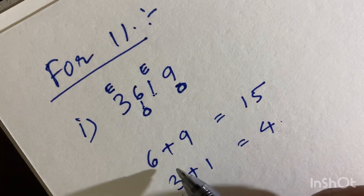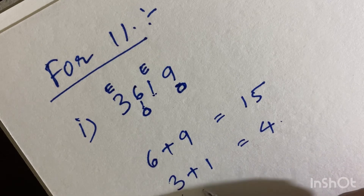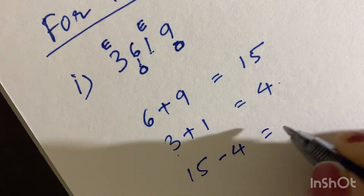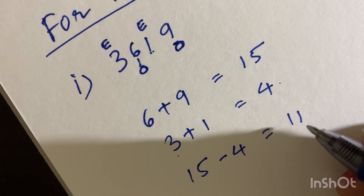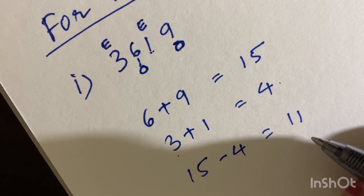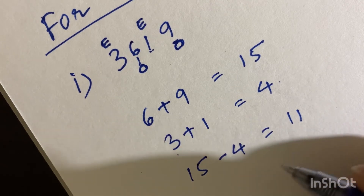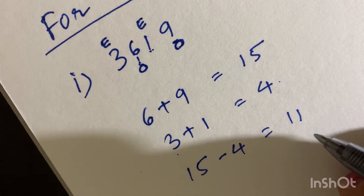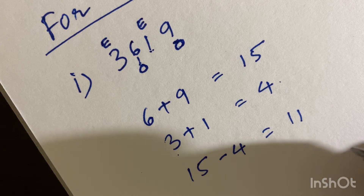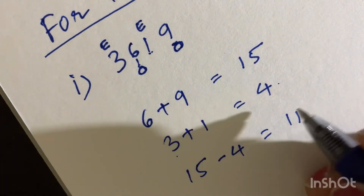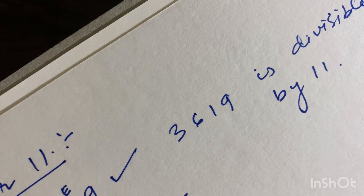Now we find the difference between the two sums: 15 minus 4 is 11. The result should be either 0 or a multiple of 11 — it could be 0, 11, 22, 33, 44, 55, and so on. Here the difference is 11, which is divisible by 11, so 3619 is divisible by 11.